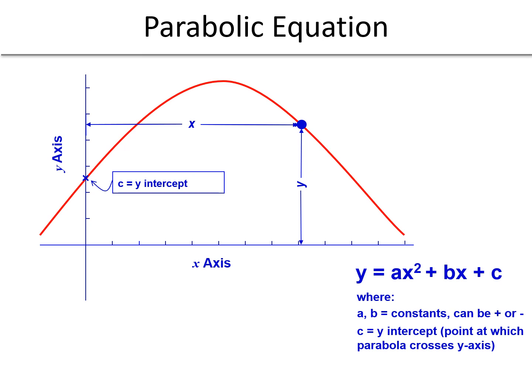In general, the parabolic equation follows this shape, defined by the equation y equals ax squared plus bx plus c, where a and b are constants and can be positive or negative, and c is the y intercept, where the parabola crosses the y axis. In our case, this is going to be the PVC elevation.